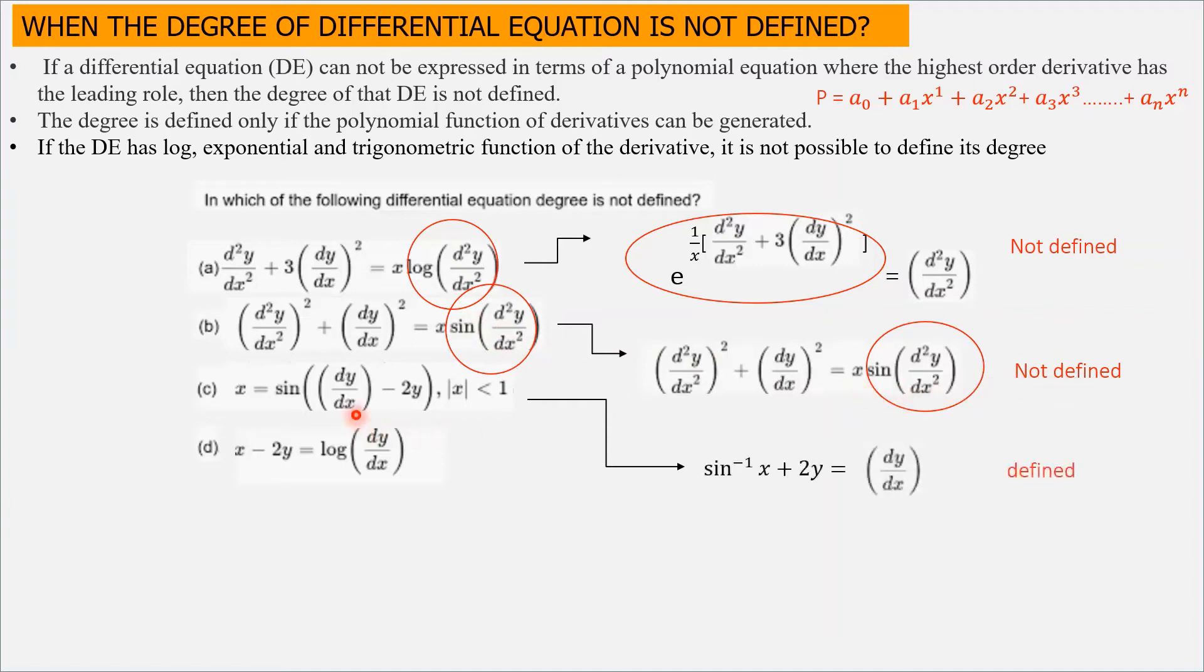Now, what about option C? Here we can write this third option as sine inverse of x plus 2y equals dy over dx.